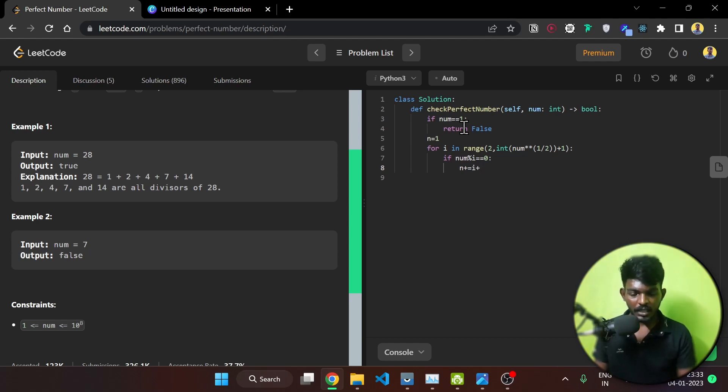We add num divided by i. So we get 2 to 14, 4 to 7. That's the logic. Now return whether the sum equals n.